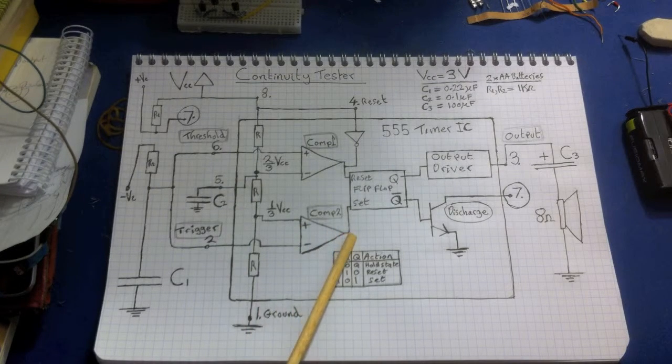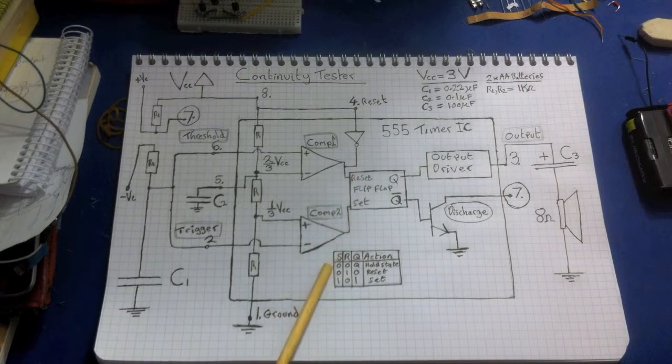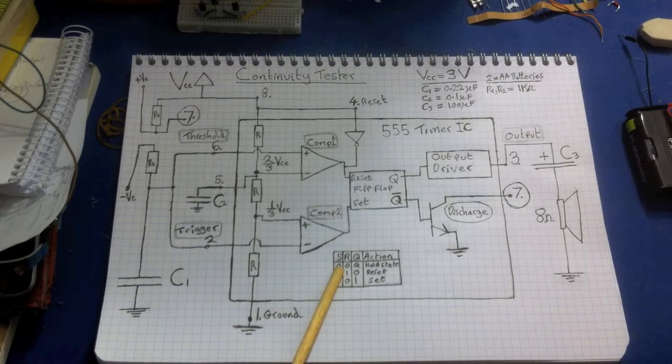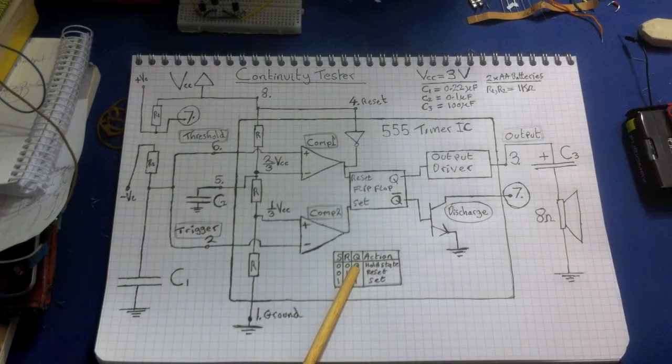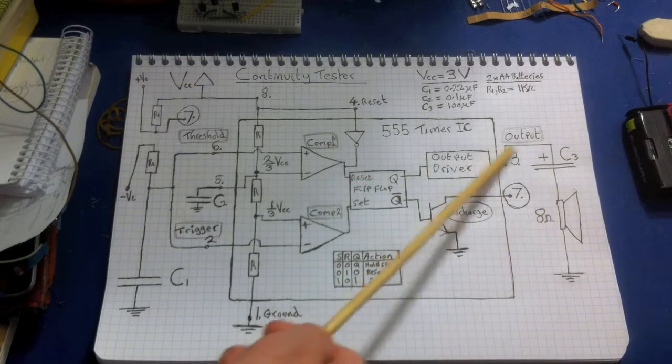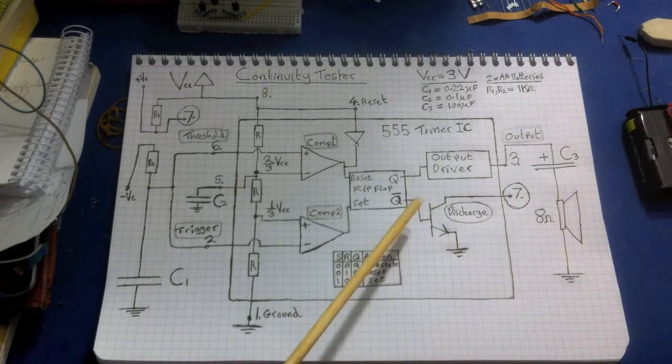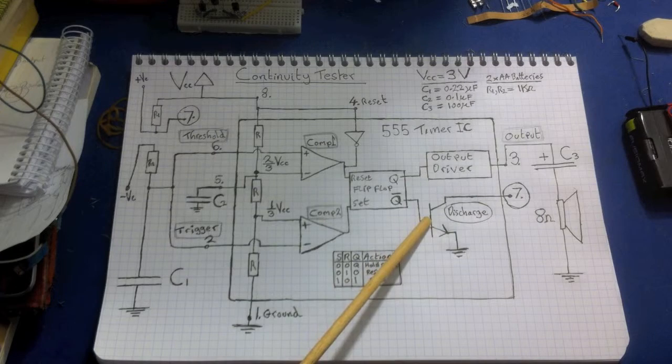But as the voltage increases on the capacitor C1, eventually this minus value will reach one-third Vcc. Now we know that when the minus value gets bigger than the plus value, then that's going to go to an output low. So when that goes to an output low, we've got a low on the set and a low on the reset. If we look on our chart there, a low on the set and a low on the reset, the Q remains the same as it was before, so it means that this still will have a current flowing through the speaker, and this value will still be a low voltage, so nothing's happening here.